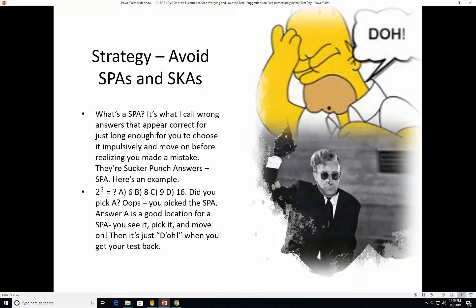Strategy, you want to avoid SPAs and SKAs. What's a SPA? I don't mean a place where you go to get a nice massage or something. It's what I call wrong answers that appear correct just long enough for you to choose it impulsively and move on before realizing you made a mistake. They're sucker punch answers, so you go, boom, you just got sucker punched. So here we have Homer going, no, and here we have Dr. Strangelove who's fallen out of his wheelchair, but he's got his gun up in the air. So this is a sucker punch answer I fell for when I took the PSAT, the only time I took the PSAT. Don't worry, I still qualified for a National Merit Scholarship, but 2 cubed. So of course, the first sucker punch answer was A, 6. Did you pick A? Oops, you picked the SPA. So did I. Answer A is a good location for a SPA. You see it, pick it, then you move on. And it's just don't when you get your test back.